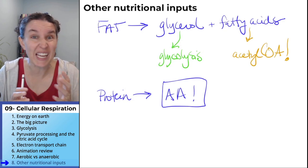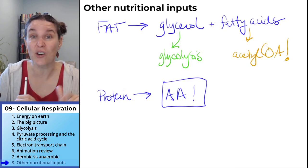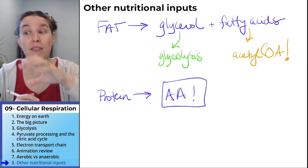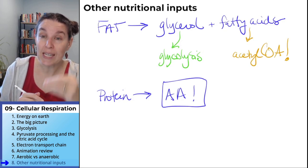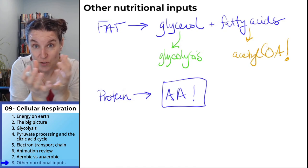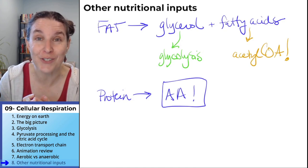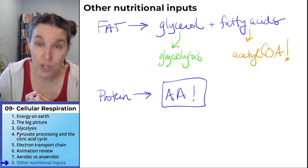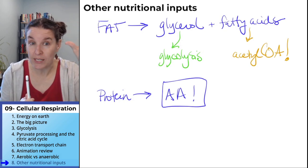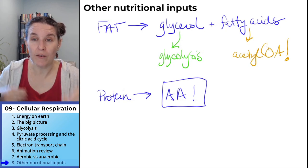So basically, you can imagine these amino acids just feeding into the existing cycle and providing energy because the energy in their chemical bonds is transferred to high-energy electron carriers, which go to the electron transport chain, resulting in a doo-doo load of energy.